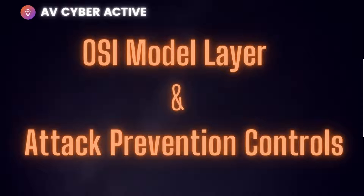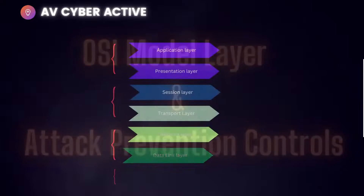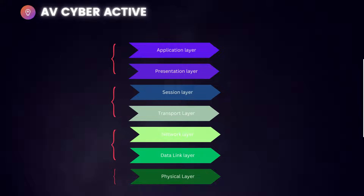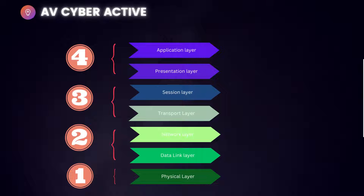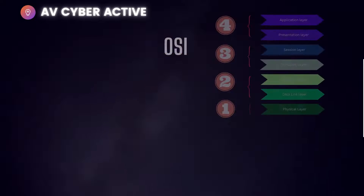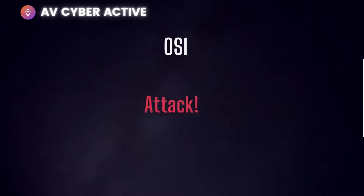Today we're going to learn the OSI model at each layer, the various attacks, and how those attacks can be prevented at each layer. This is going to be a four-part series and you're watching part one of four video episodes. In today's video, we will learn the OSI model at a very high level, how one of its layers is vulnerable to attacks, and the mitigation or preventative controls that can be put in place to mitigate or minimize the impact of the attacker.